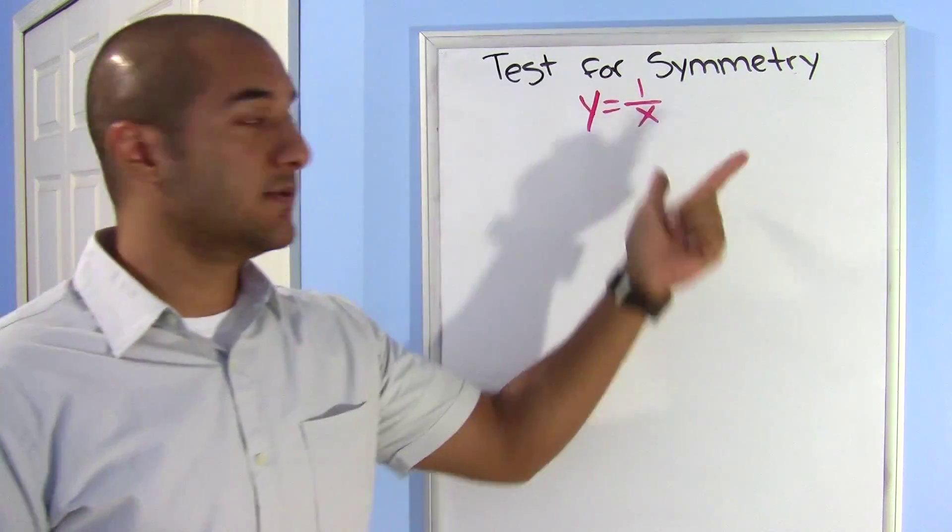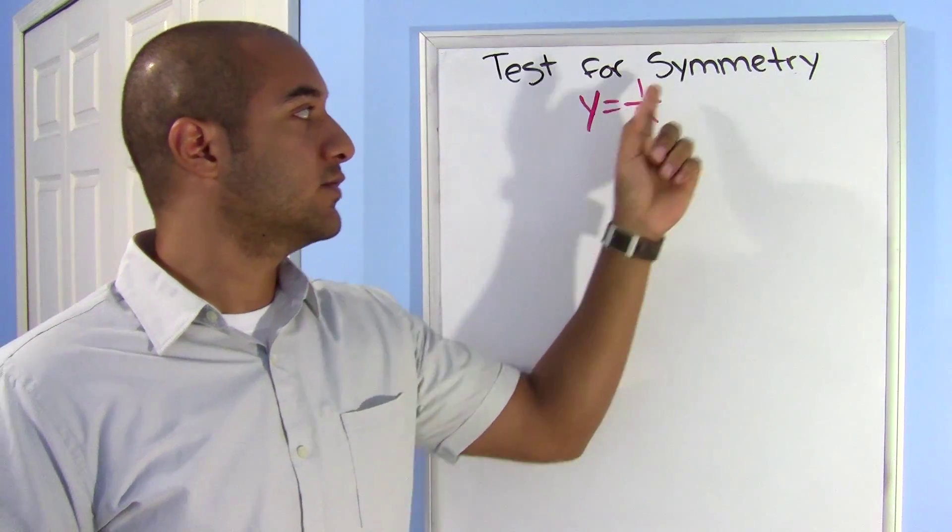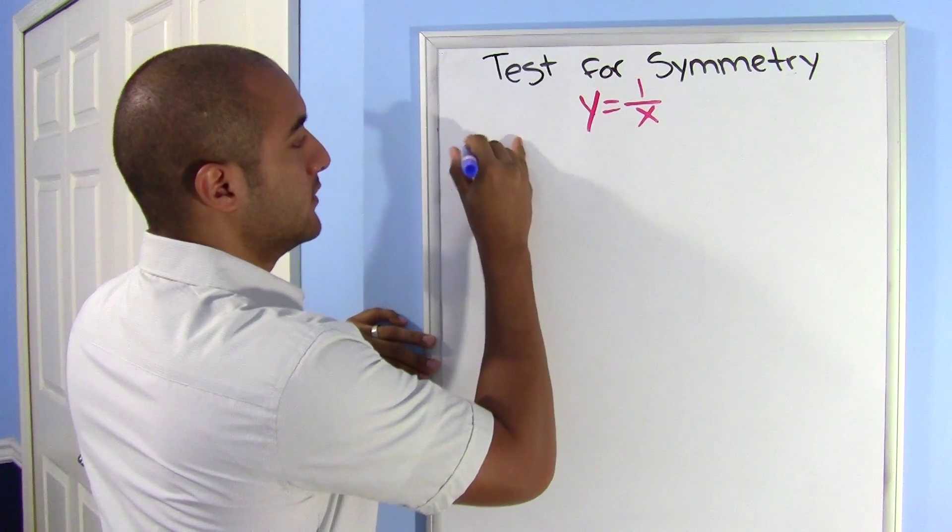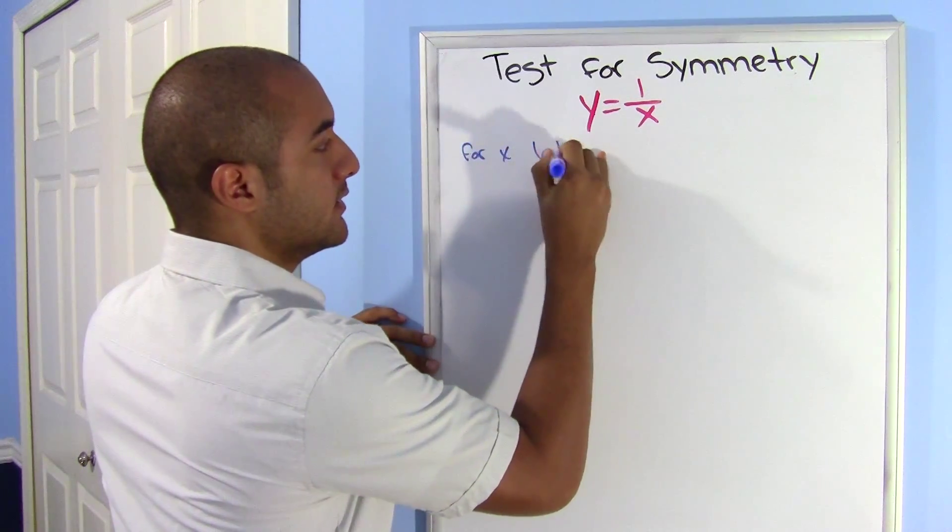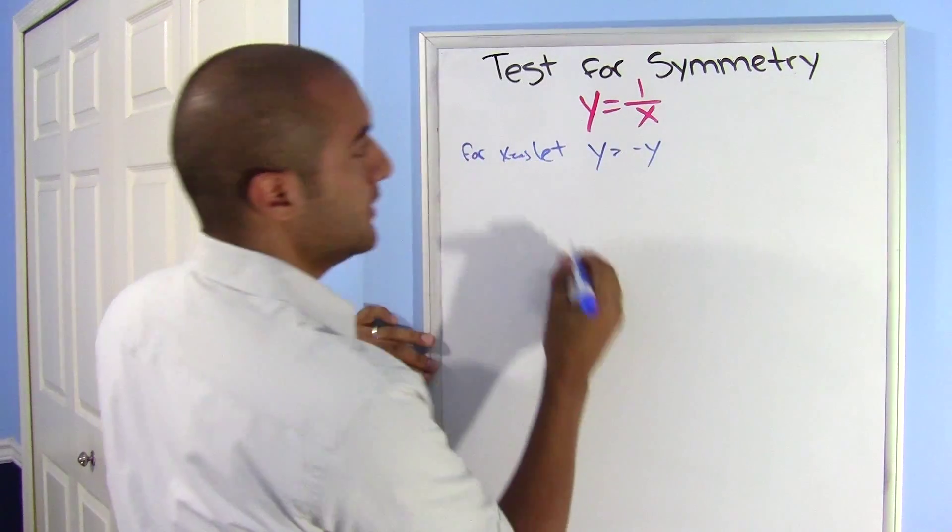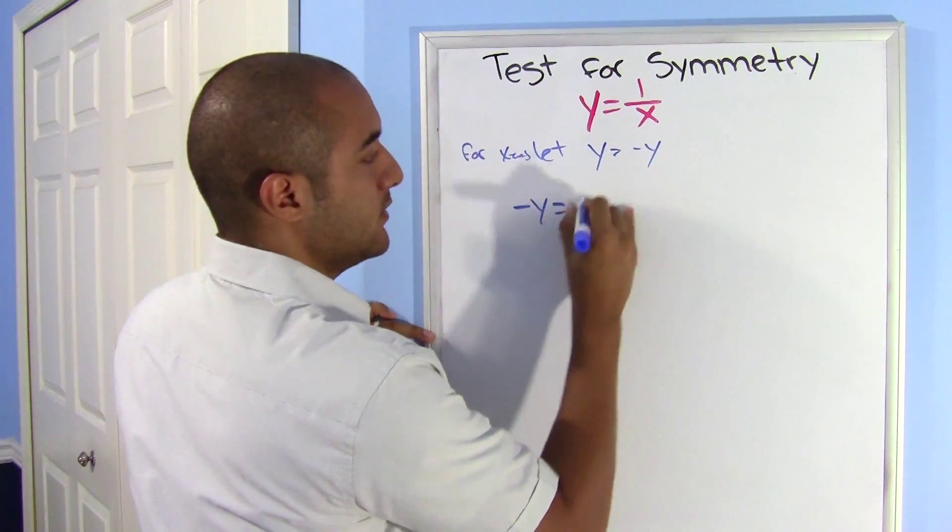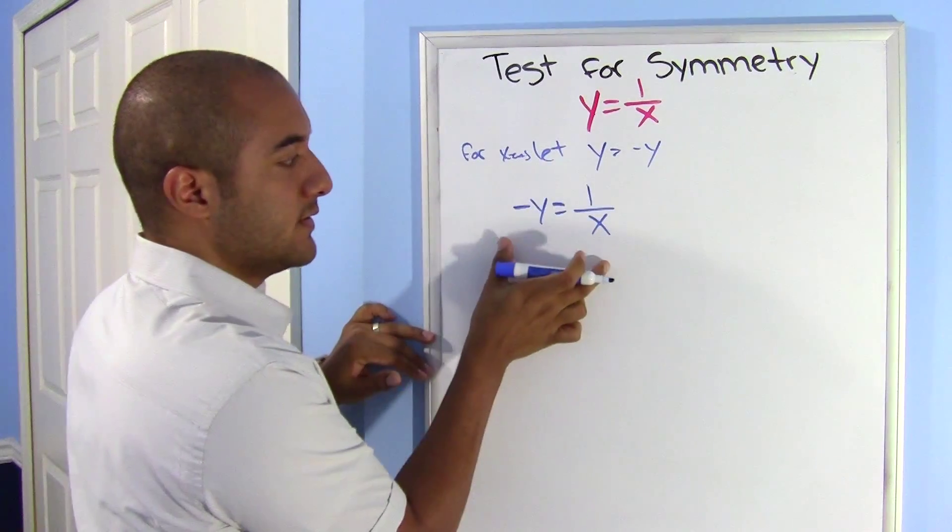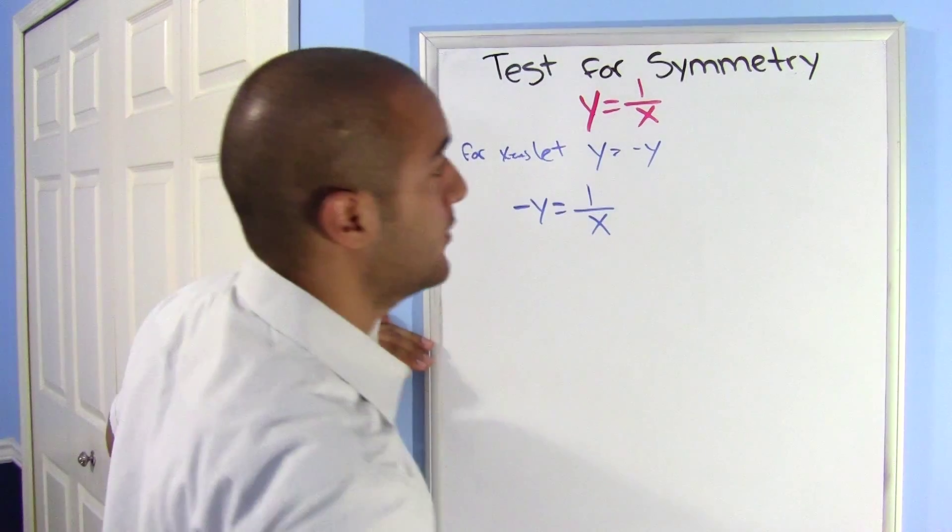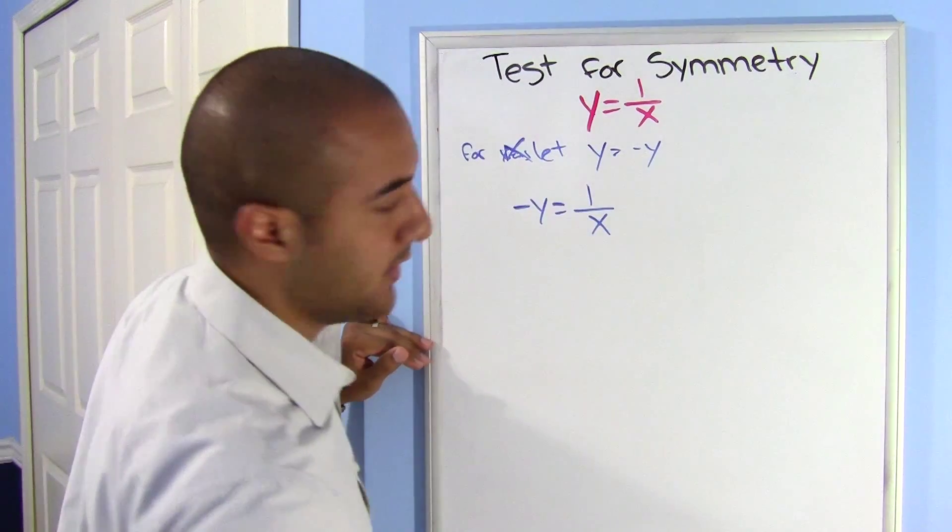Alright, let's go ahead and try this one out. Still testing for symmetry. This one is y equals 1 over x. Starting off with my x. So for x, let y equal negative y. So negative y equals 1 over x. Does anything happen here? No. And I don't have my original equation, so it is not symmetric about the x.